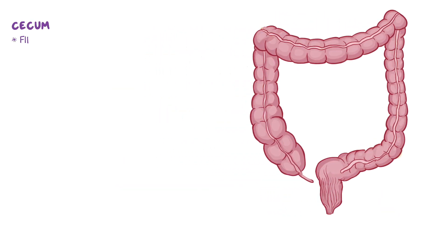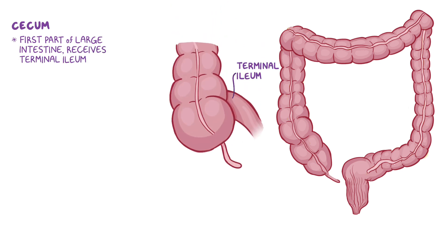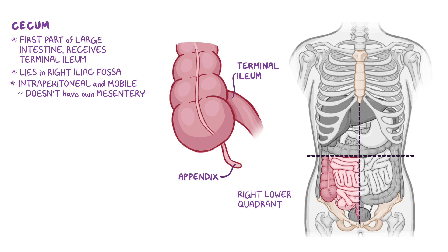The cecum is the first part of the large intestine and it receives the terminal ileum, which invaginates into the medial side of the cecum. The cecum lies in the right iliac fossa in the right lower quadrant of the abdomen and looks a bit like an intestinal pouch. It is intraperitoneal, mobile, and doesn't have its own mesentery. On its posteromedial wall, inferior to the ileocecal junction, the cecum has a blind-ended organ called the appendix, which can vary in length up to and over 10 centimeters.